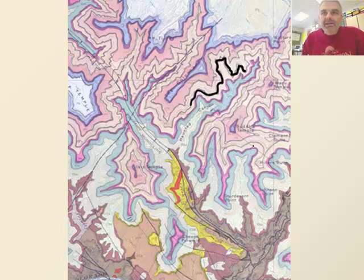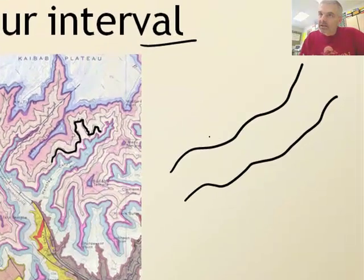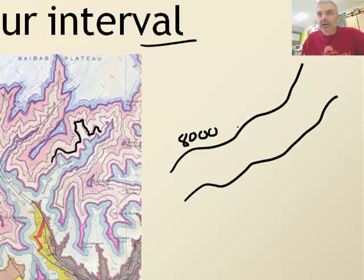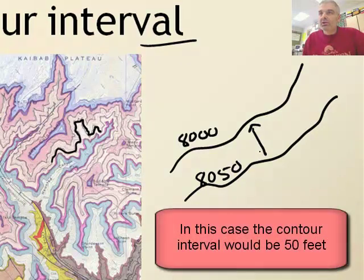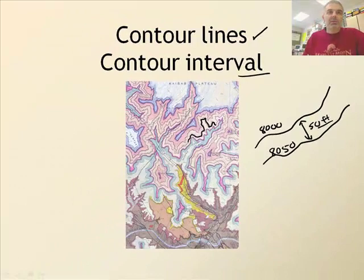A contour interval is the elevation difference — going up or down, like up a mountain. So if I have a line here at 8,000 feet and this line here is 8,050 feet, the contour interval is the distance for each line. In this case it would be 50 feet. That's the contour interval, and that's how you would figure that out.